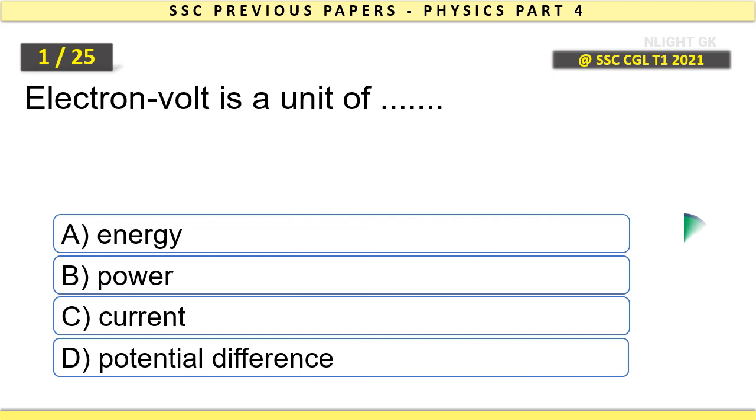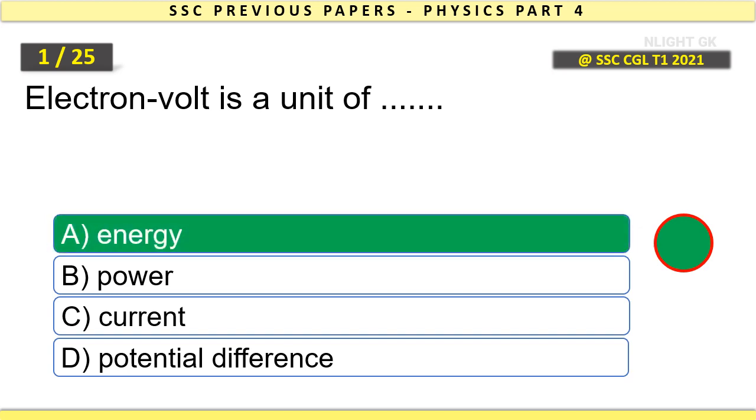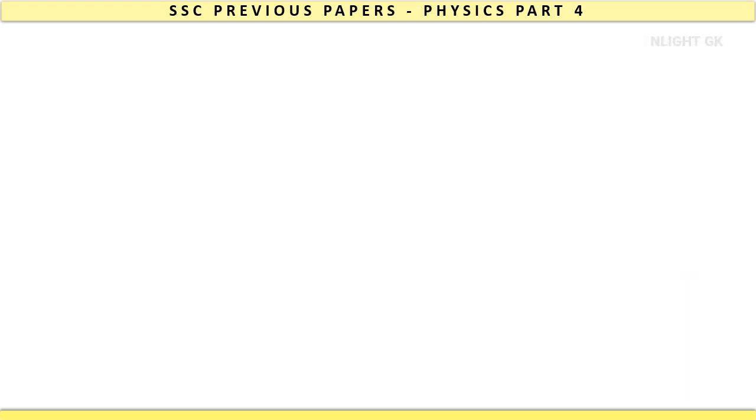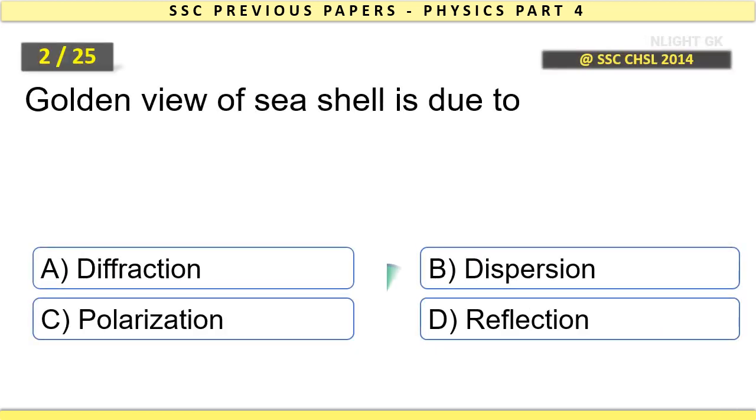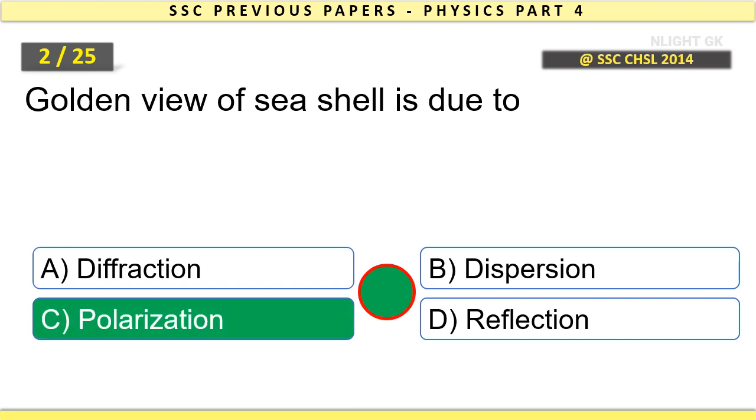Electron volt is a unit of energy. Golden view of seashell is due to polarization.